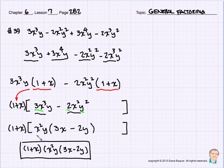So when we did that, we factored out that x squared y, and we finish up with 1 plus x as a factor, x squared y as a factor, and 3x minus 2y. So there's our answer for number 39.